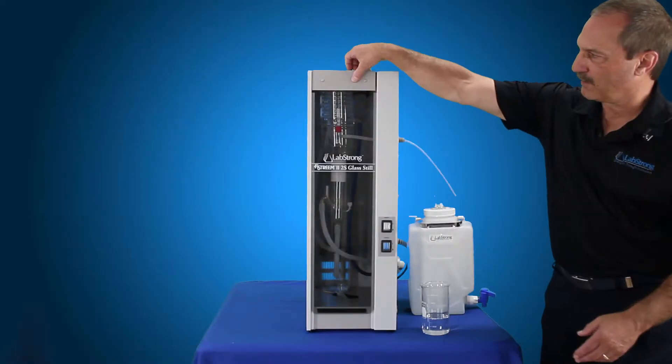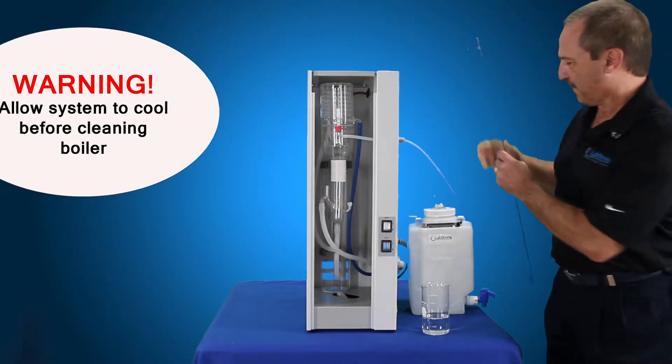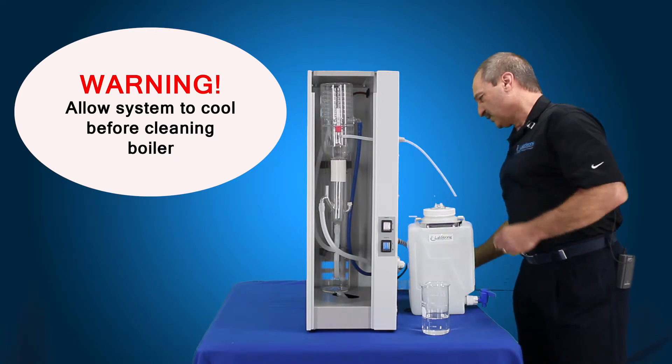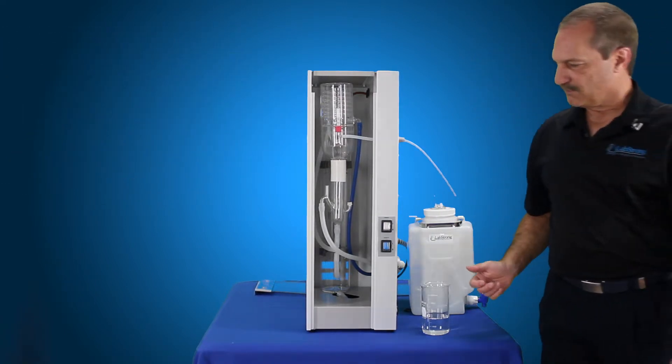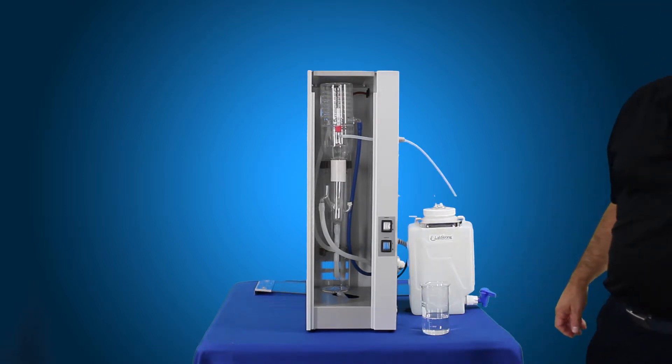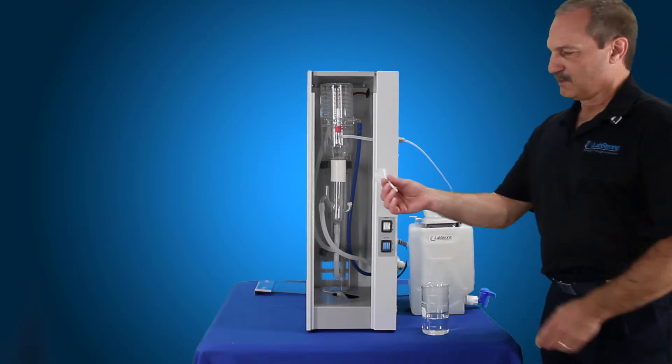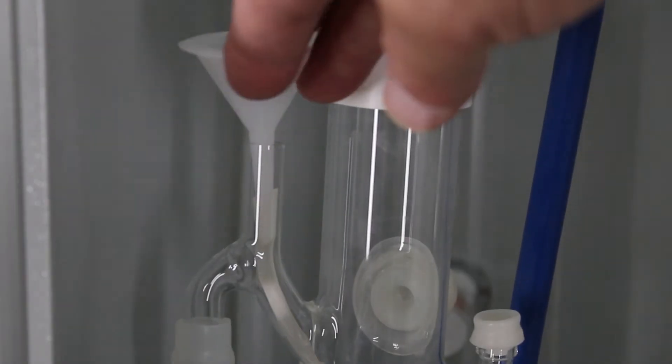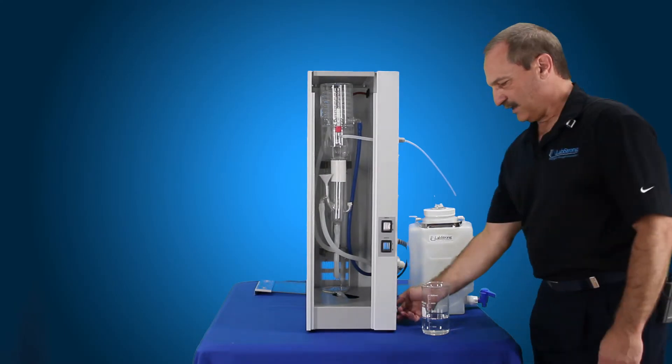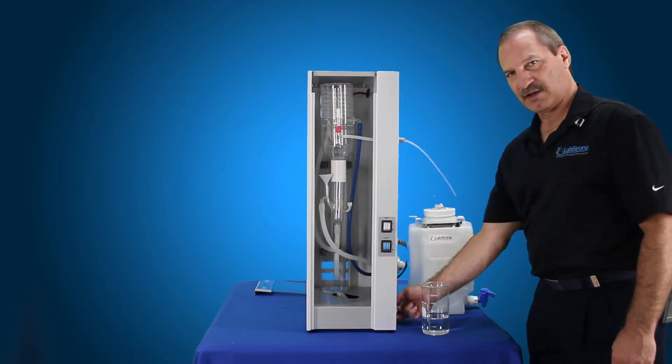We're going to go ahead and remove our cover. Each FireStream 2S still will come with a funnel, and the funnel is placed in the vent tube of the constant level device. Just put that down inside of there so that's going to go into the boiler. Again, that's why you want to make sure that your drain valve is closed.